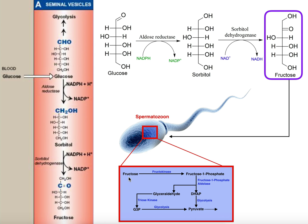During ejaculation, a man releases sperm cells along with amounts of fructose, and the sperm cells import that fructose and metabolize it. The fructose is phosphorylated into fructose 1-phosphate and through a series of reactions generates glycolytic intermediates such as dihydroxyacetone phosphate (DHAP) and glyceraldehyde 3-phosphate (G3P), both of which go through glycolysis to generate pyruvate, acetyl-CoA, and so on. All that energy is used mainly by the spermatozoan to propel its flagella so it can swim toward the egg for fertilization — and this all originates from the molecule sorbitol.